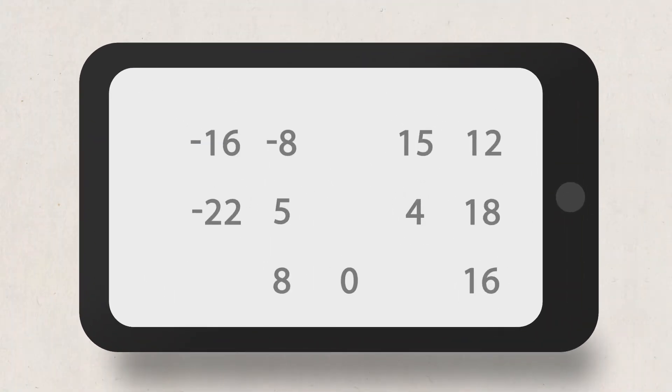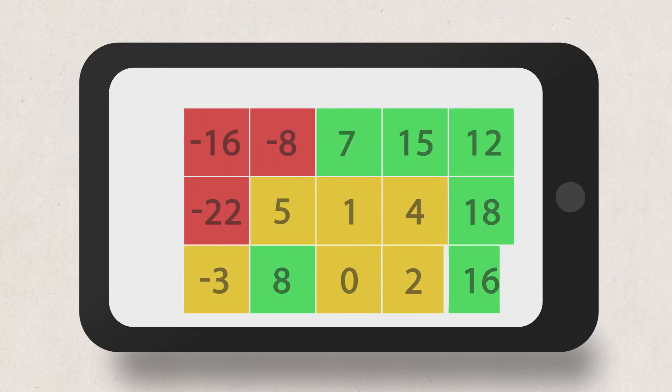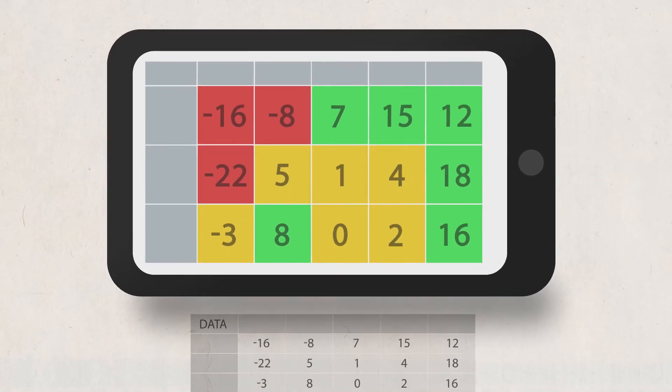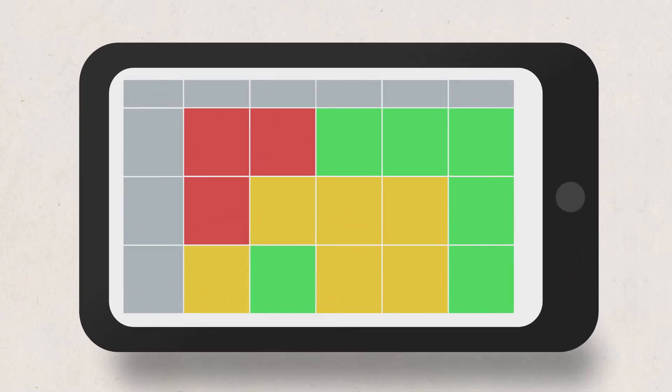A heat map is a graphical representation of data where values are expressed as colors. Heat maps provide an effective visual summary of information because they synthesize data and then present it in a pictorial form.